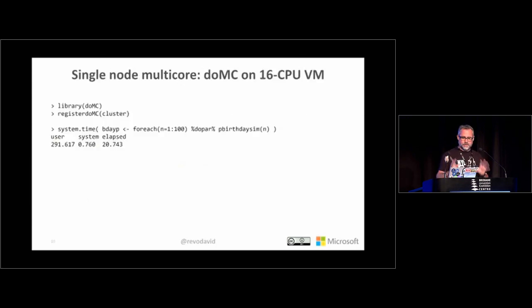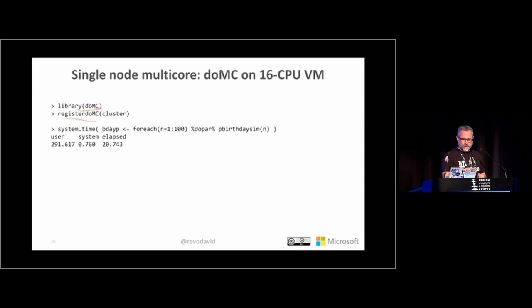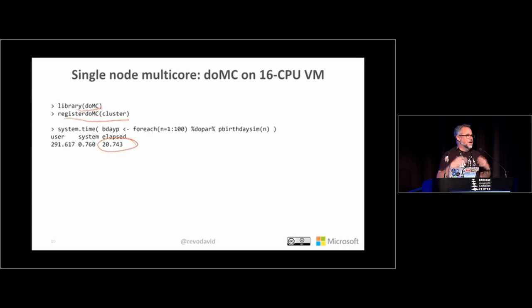Suppose I had a big machine with 16 cores. I could easily spin up a single virtual machine in the cloud, log into it, use the doMC library to declare another back end, and specify that the cluster runs 16 iterations at once — one per core. With the same code, instead of the three minutes it took on my local laptop, that computation runs in 21 seconds on the more powerful machine. That's a pretty significant improvement without writing any additional code.